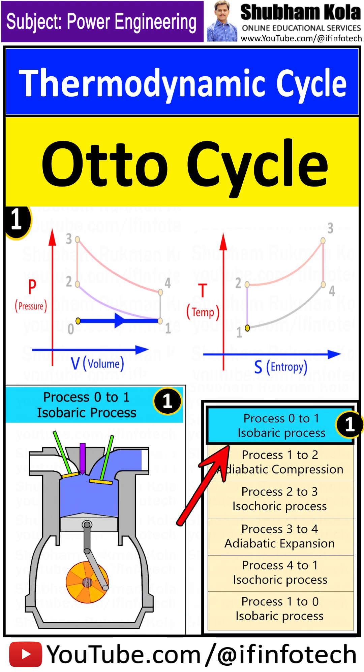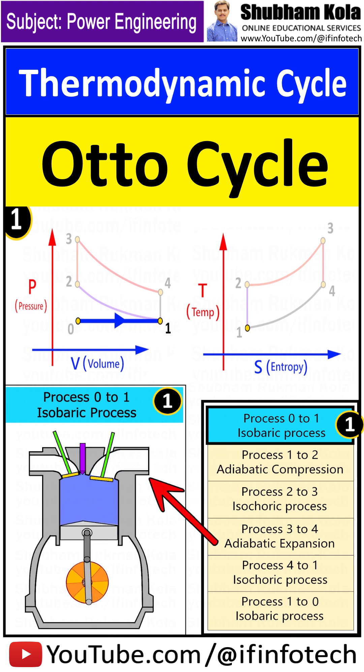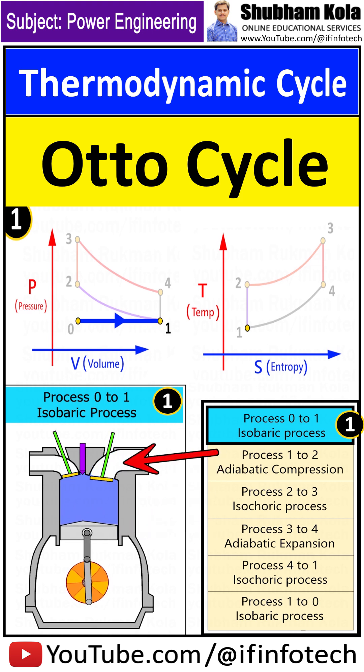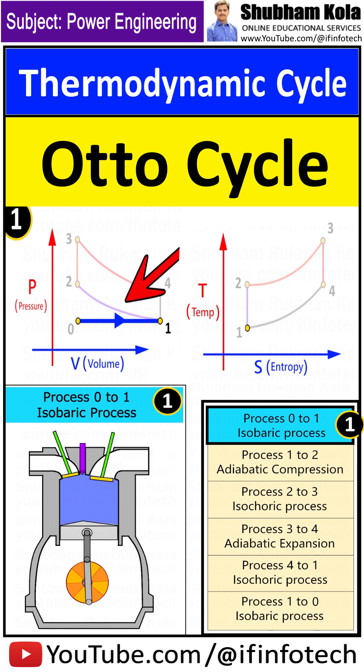Process 0 to 1 is an isobaric process where the piston is moved down to allow volume in the chamber, so it can intake the air-fuel mixture at constant pressure.